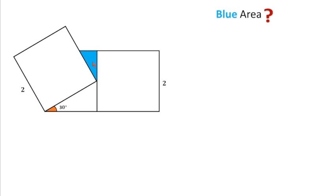So how can we find this area? According to the question, if this angle is 30 degrees and this angle is 90 degrees, then this angle will be 60 degrees so that the sum of all three angles is equal to 180 degrees.